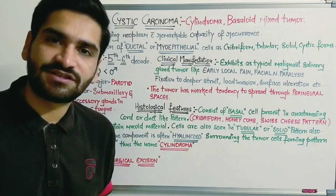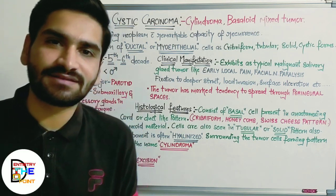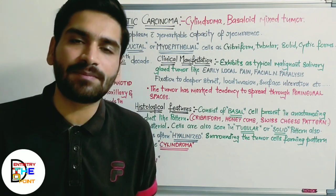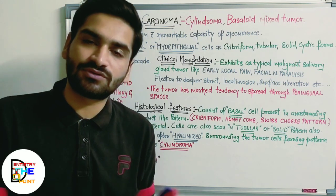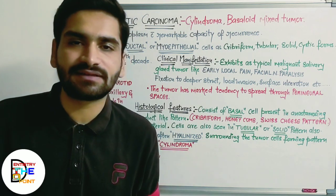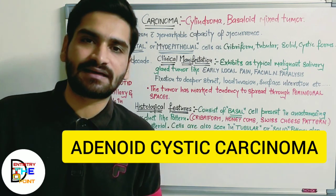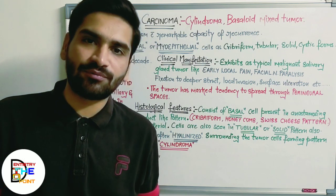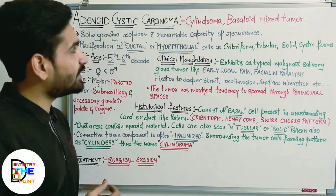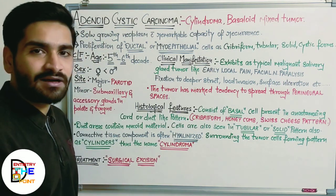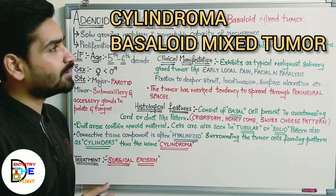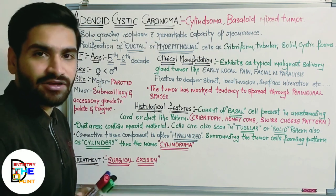Hi everyone, welcome back to our channel Dentistry to the Point. This is Dr. Dromil Manik. Previously we ended with the discussion of mucoepidermoid carcinoma, which was one of the most common malignant salivary gland tumors. Today our topic for discussion is adenoid cystic carcinoma — again not so common, but it has its name in the list of commonest tumors of salivary gland. Adenoid cystic carcinoma has two names: cylindroma and basaloid mixed tumor.